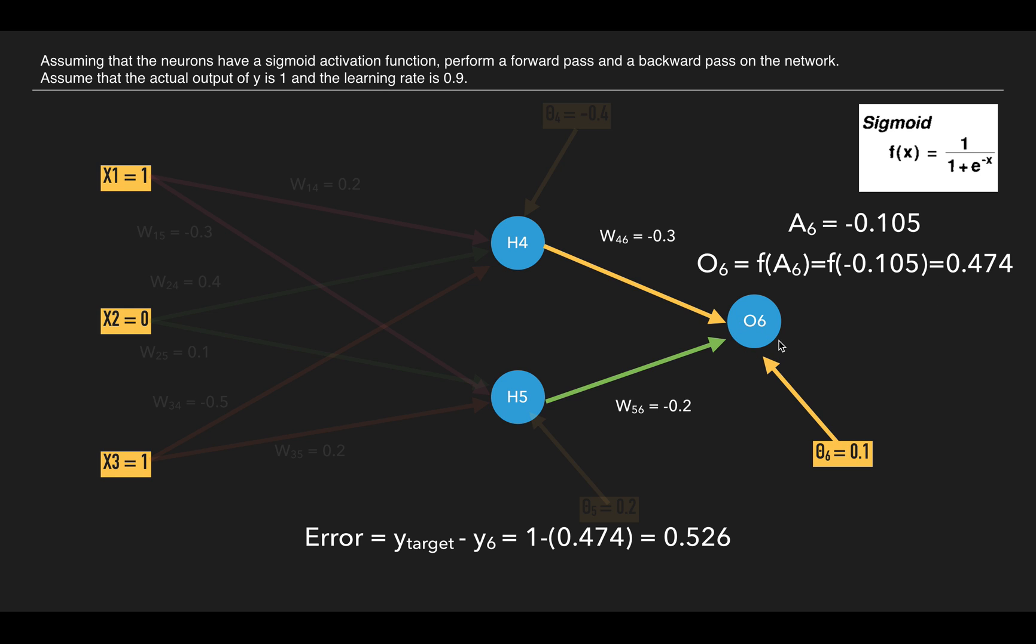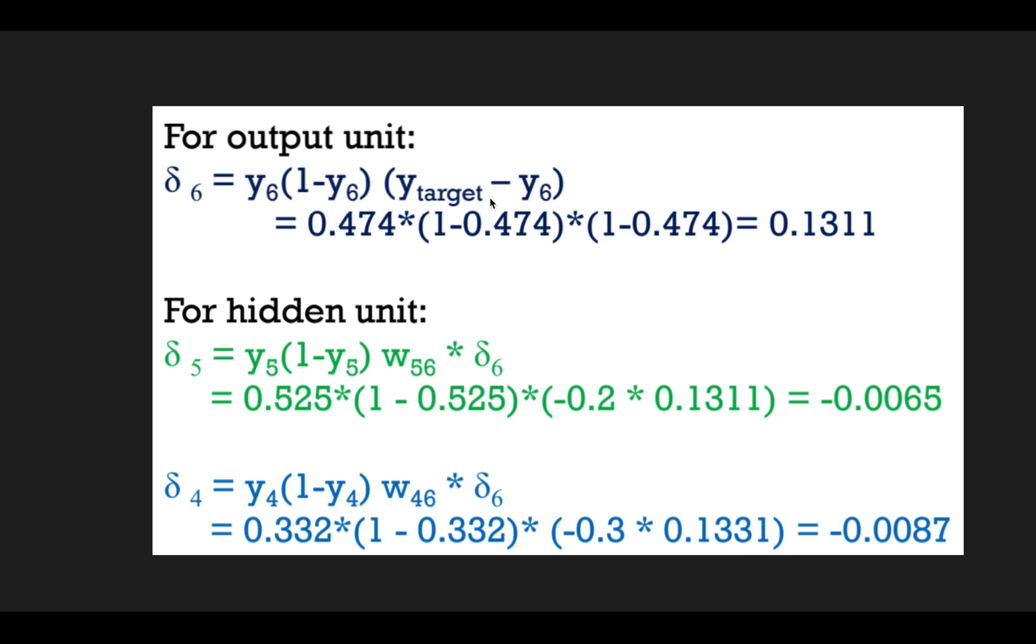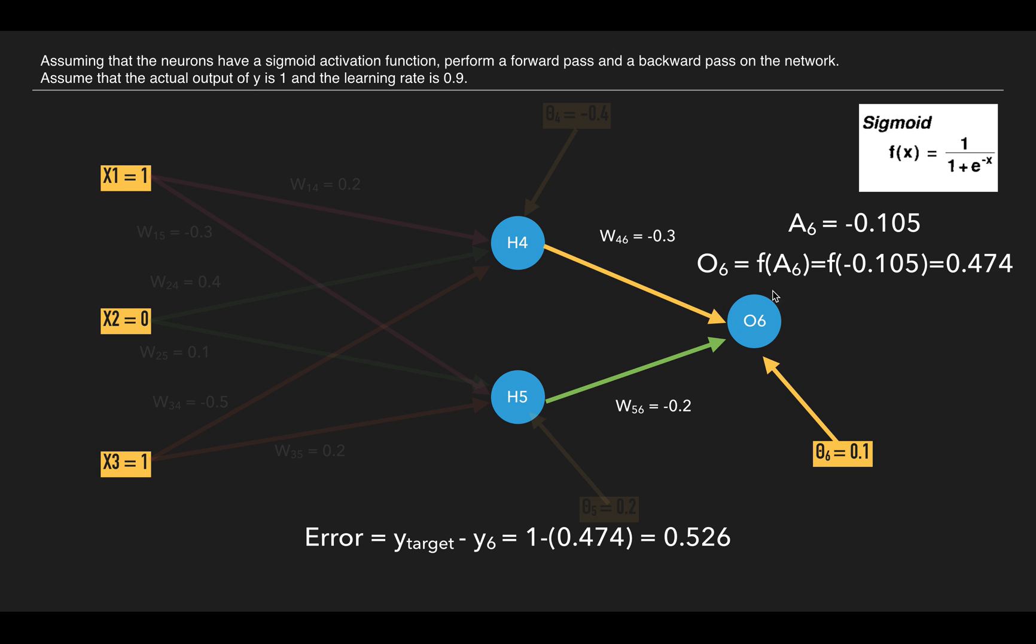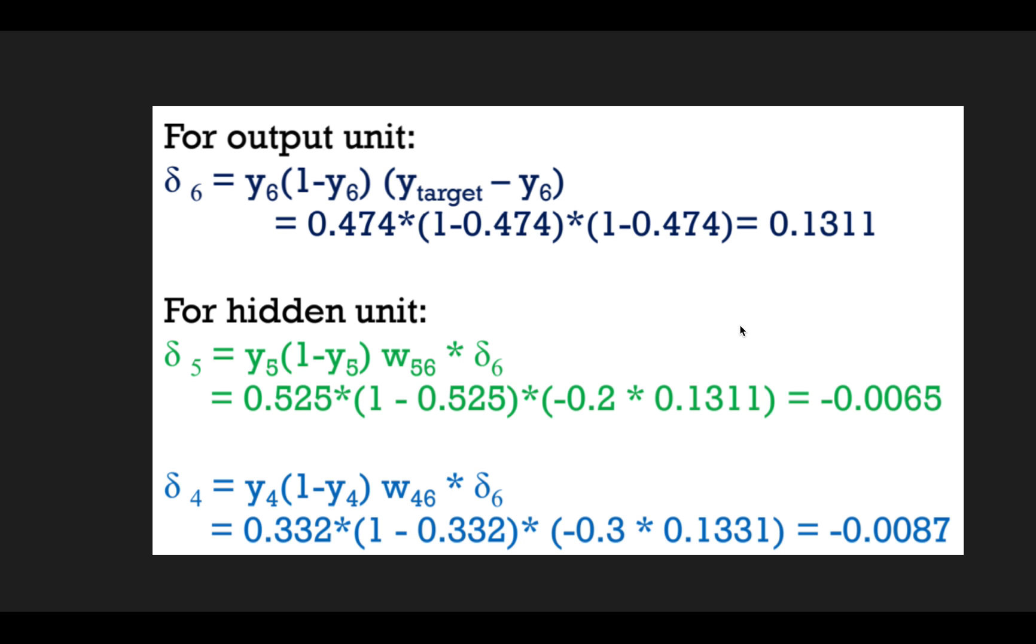Now since this is an output value, we can calculate the error we got. Since the actual output is 1 and we got 0.474, the error would be 1 minus 0.474, that is 0.526. Now from this error we can calculate our delta_6 for the 6th node, that is the output unit.